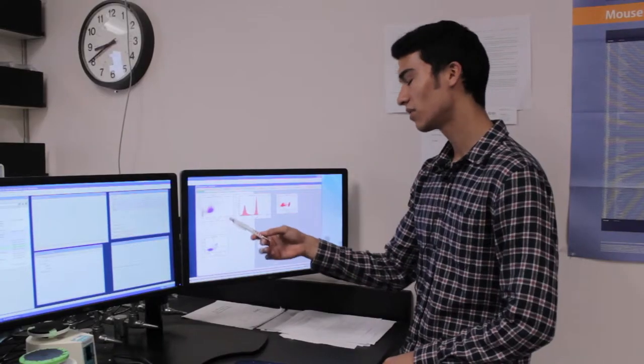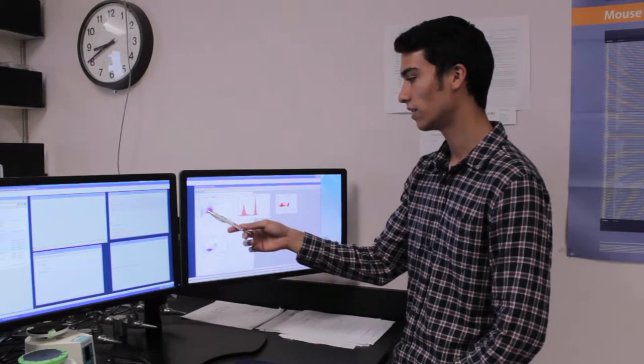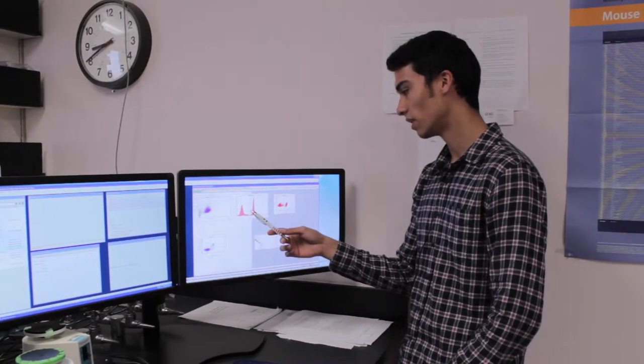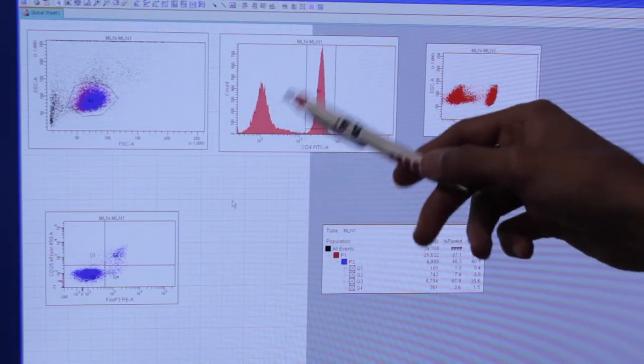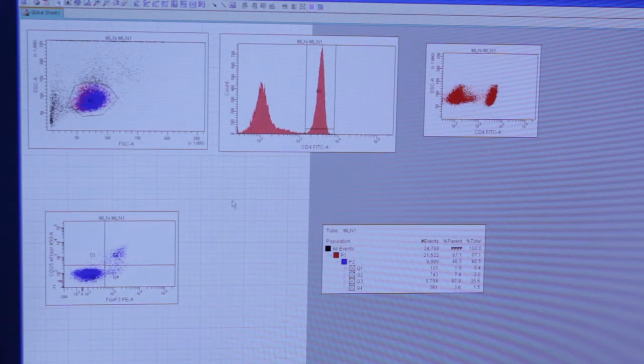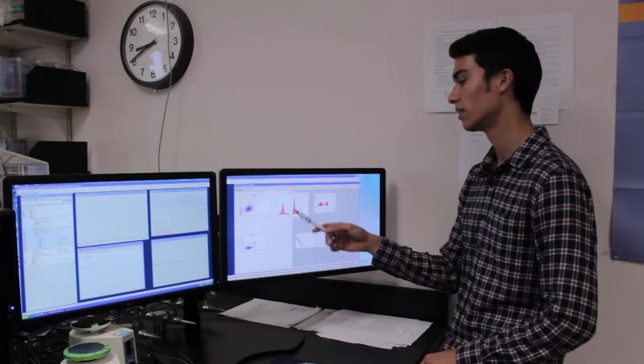After everything is completed, you will be able to see your results in the form of several graphs. In this graph, for example, you are able to see the concentration of dead and alive cells, whereas this graph tells you the number of unstained cells as opposed to stained cells.